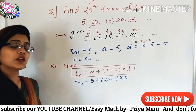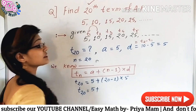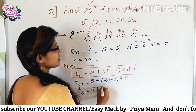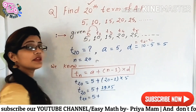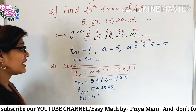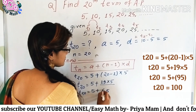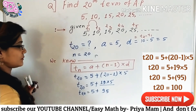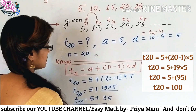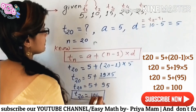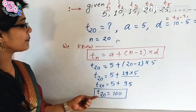So, ये value substitute कर दो. Now, we have to simplify this equation only. So, T of 20 is equal to 5 plus — सबसे पहले bracket solve कर लो. 20 minus 1 is 19, multiply by 5. So, T of 20 is equal to 5 plus — multiplication कर दो. 19 multiply by 5 is 95. So, T of 20 is equal to 95 plus 5 is 100. तो, यह जो sequence है, इस sequence में 20th term होगी आपकी 100.